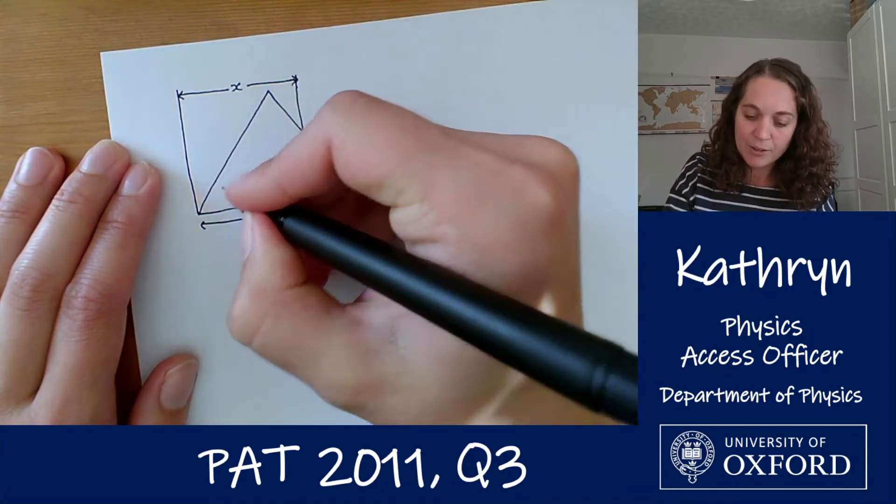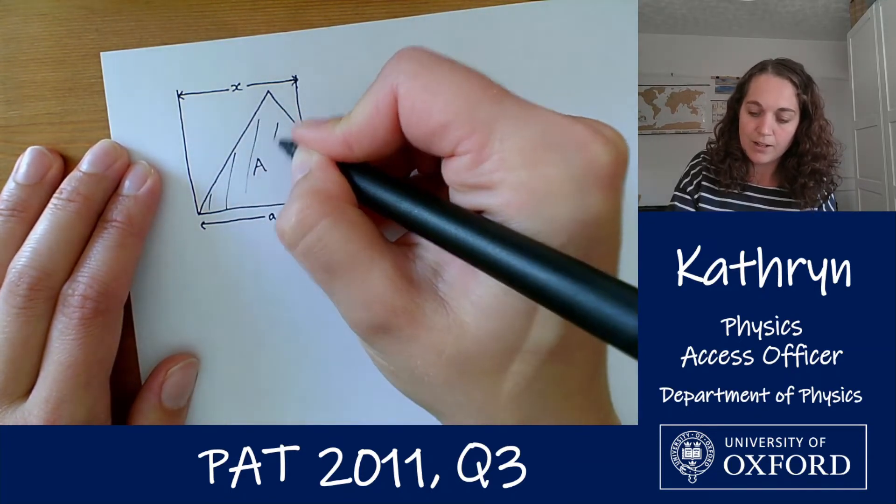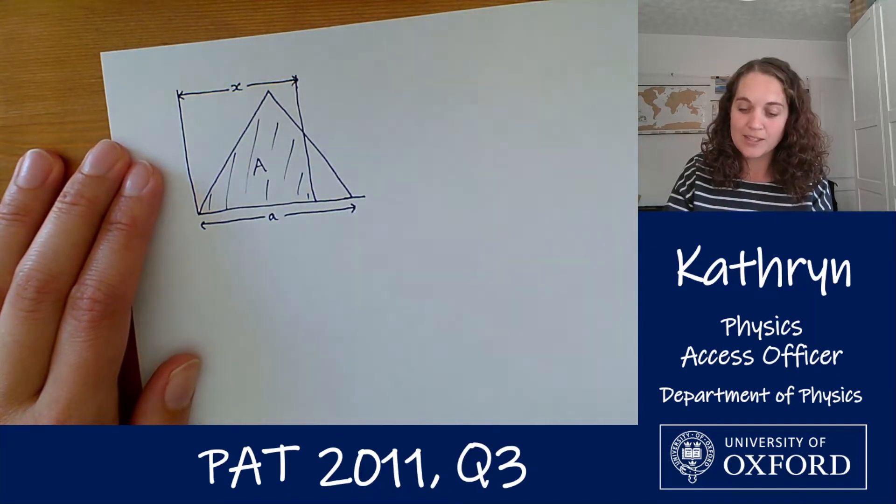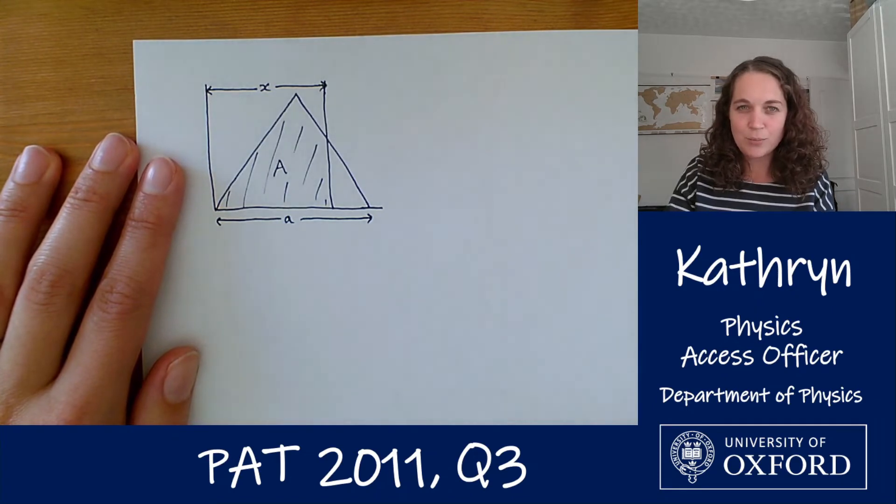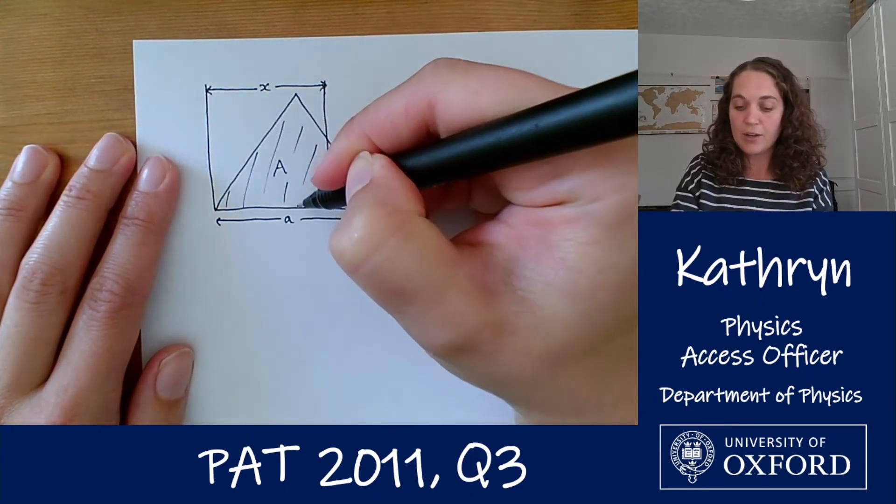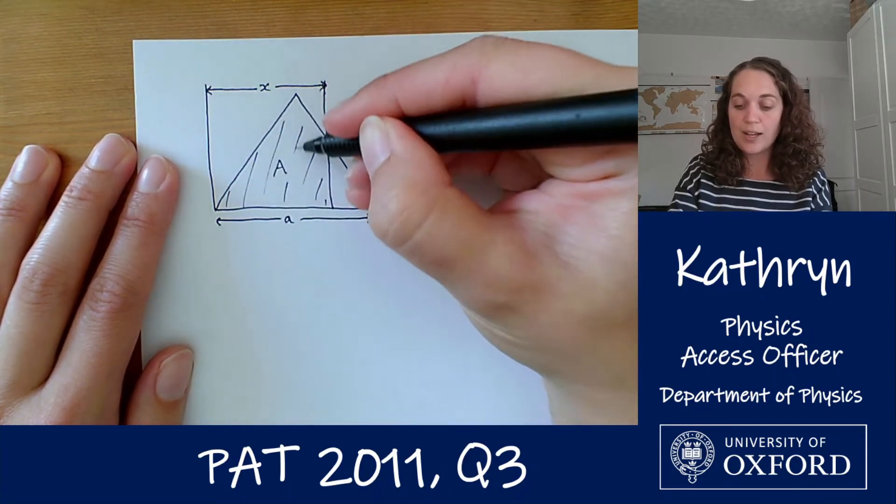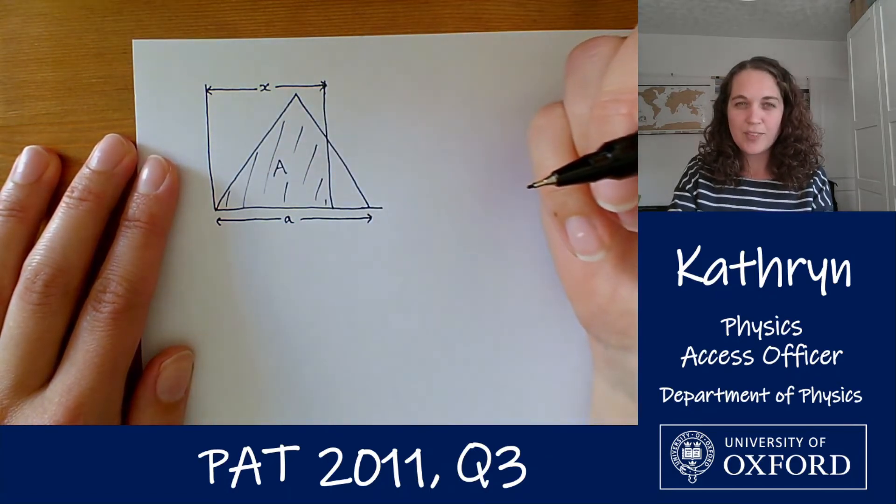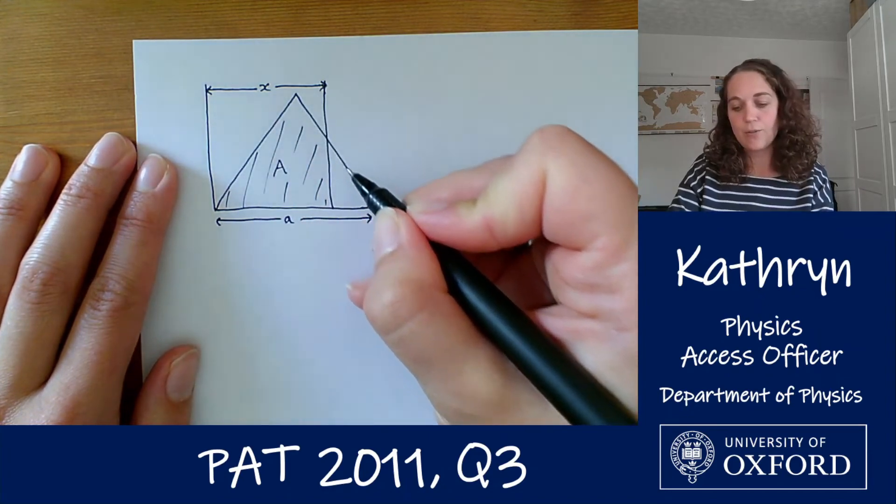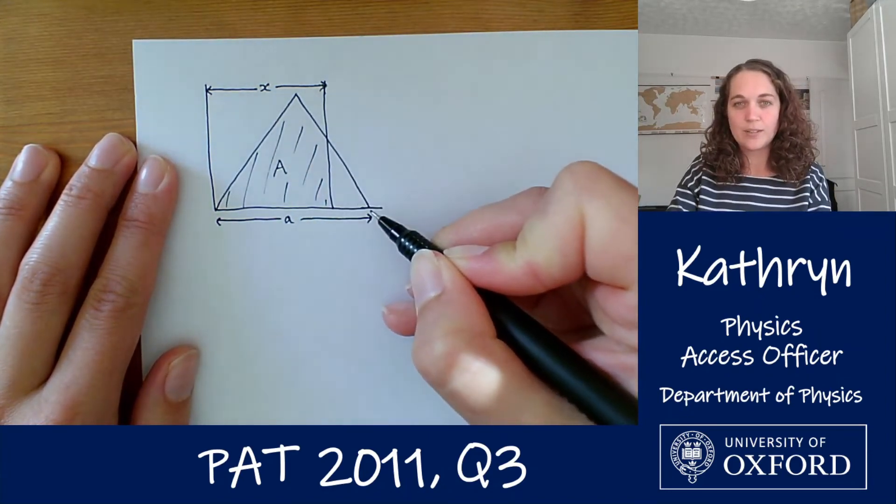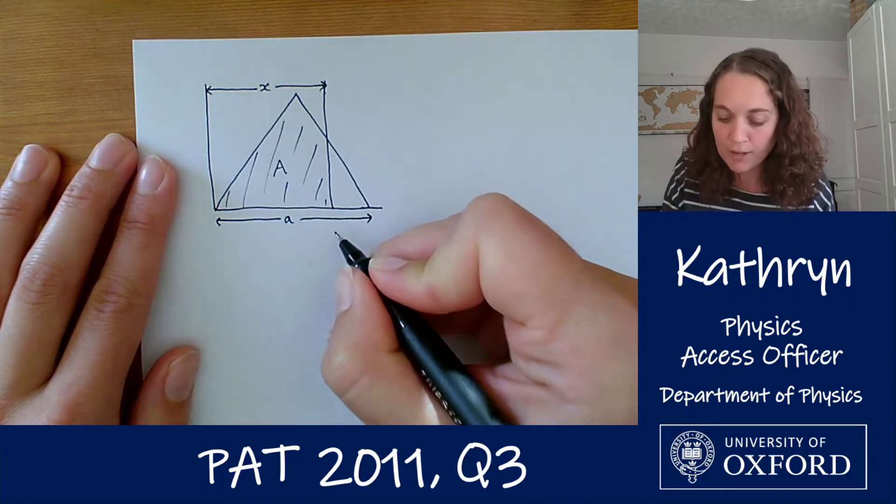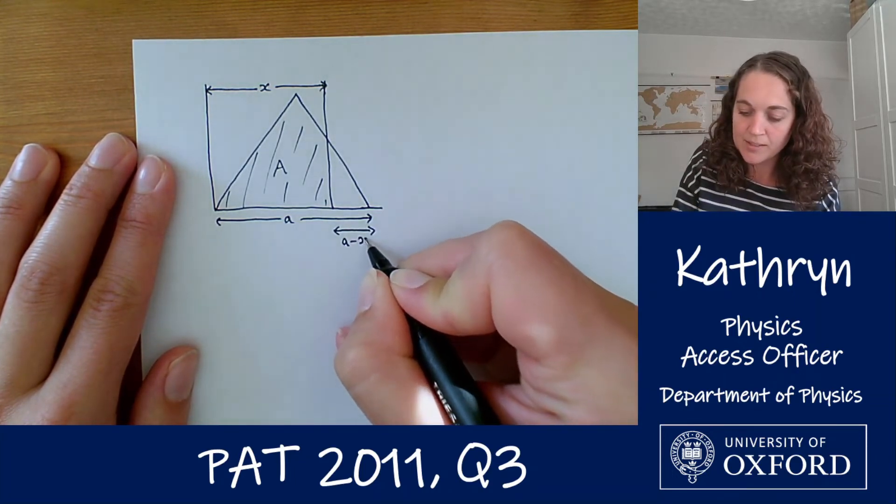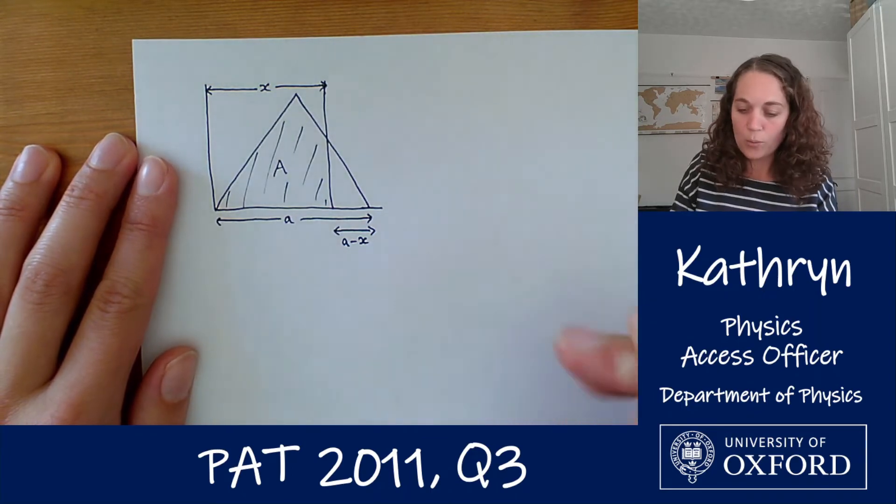And the area that we're trying to find is this area here. That's what we're looking for. Now there are a couple of ways of thinking about this and it's kind of going to depend what is most obvious to you. You might want to find the area of one half triangle and then work out the area of this other shape that remains here and add the two together. But the most obvious thing for me is to think about the area of the whole triangle and then subtract off this little corner here. Because we already know what this length here is, we know that that is going to be a minus x.